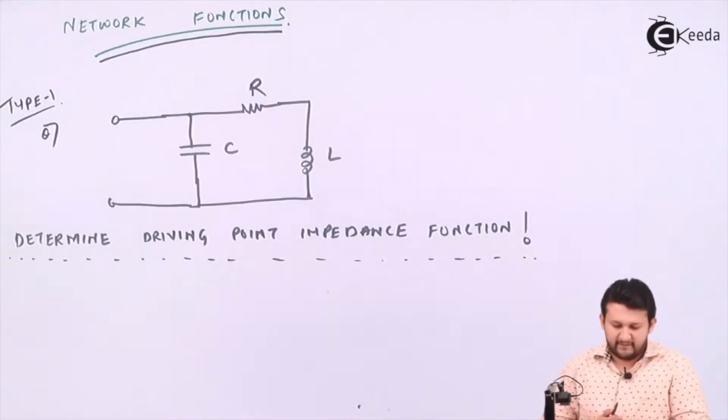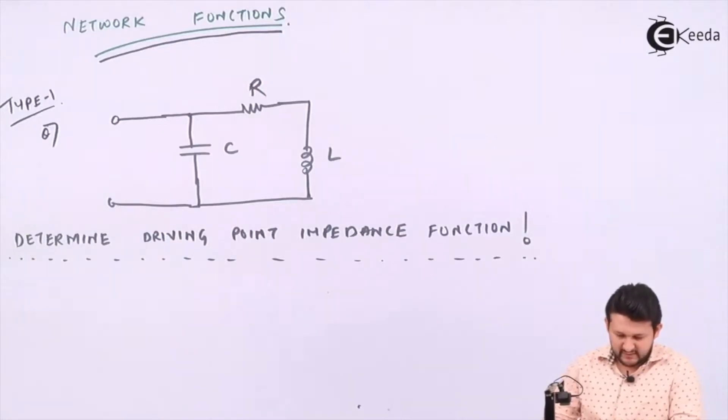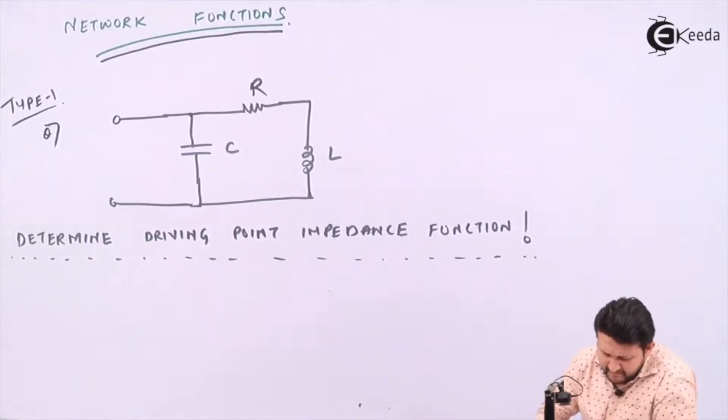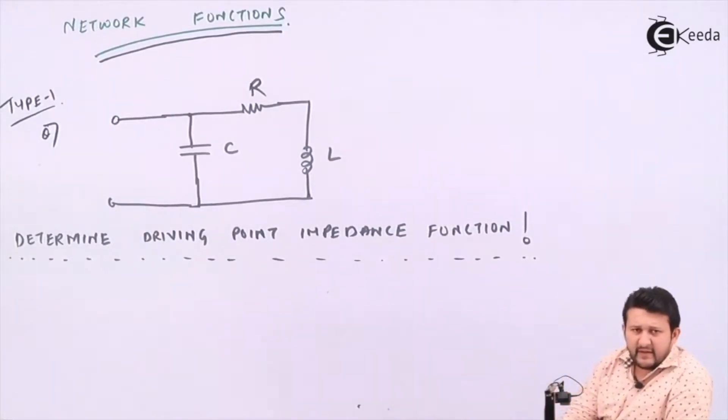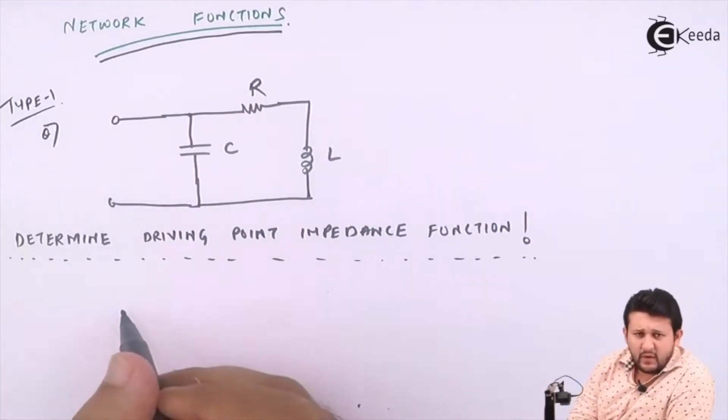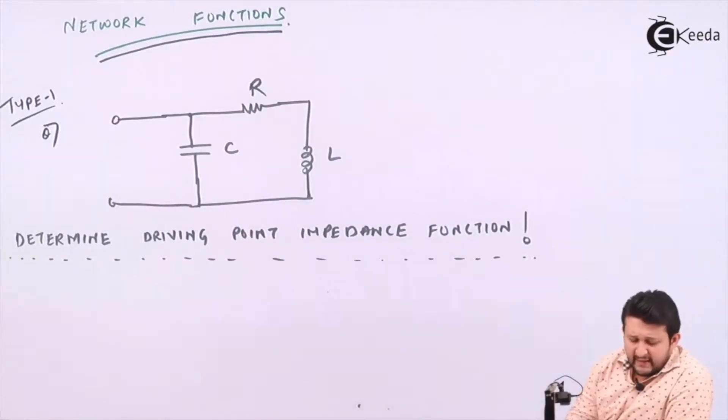Okay, let's have a look at a new chapter known as network functions, one of the simplest chapters, similar to what we did in Laplace. When I say similar, I mean the basic formulas of inductors and capacitors. The only thing in type 1 we need to do is find the driving point impedance.